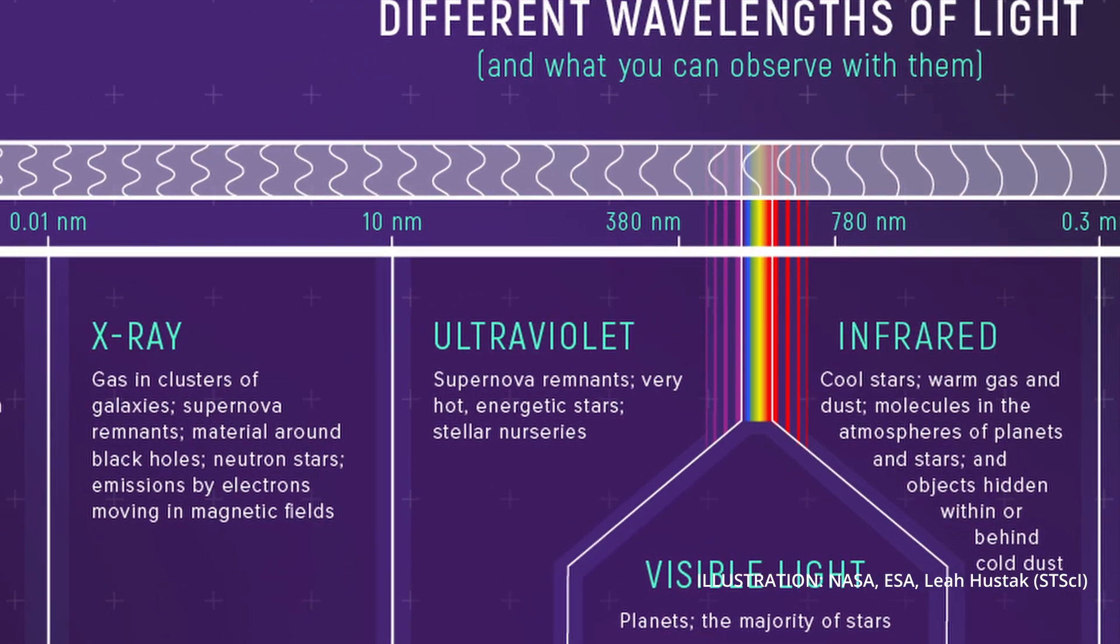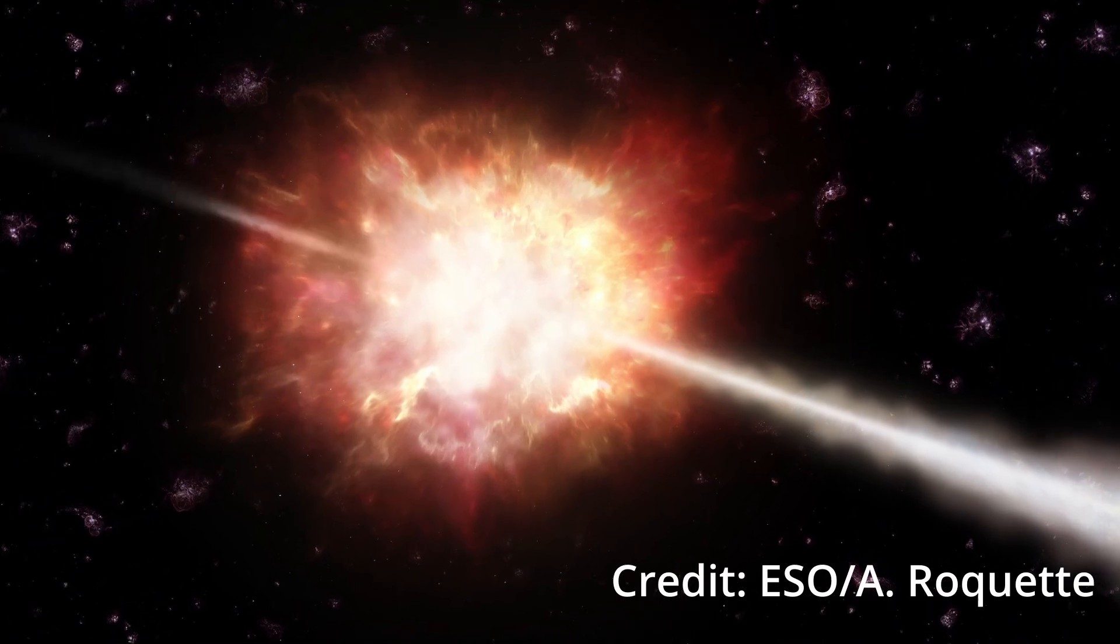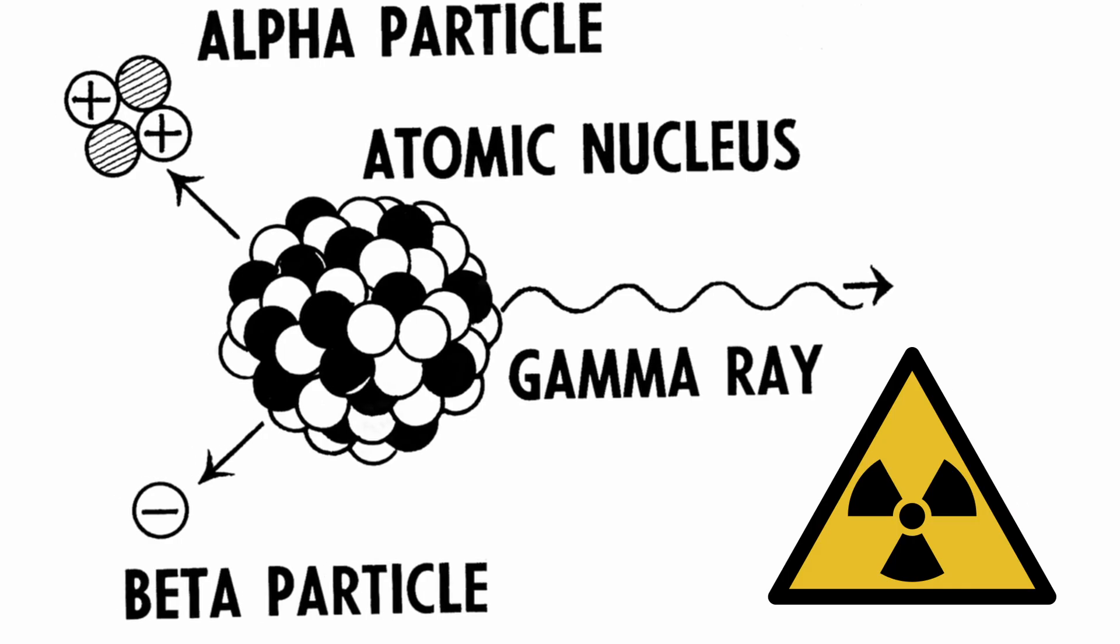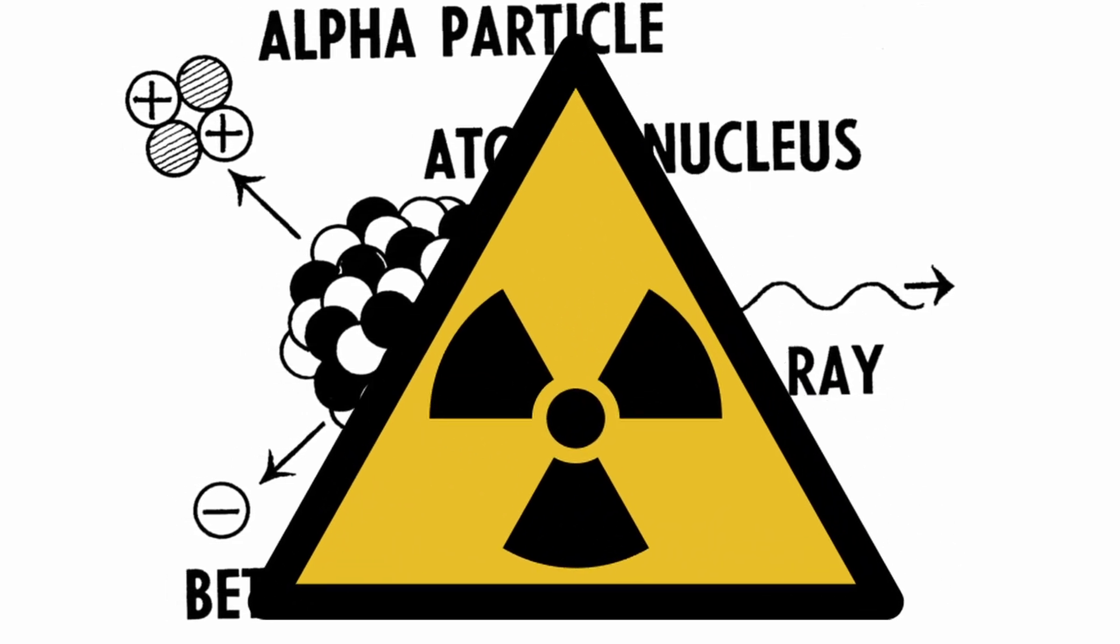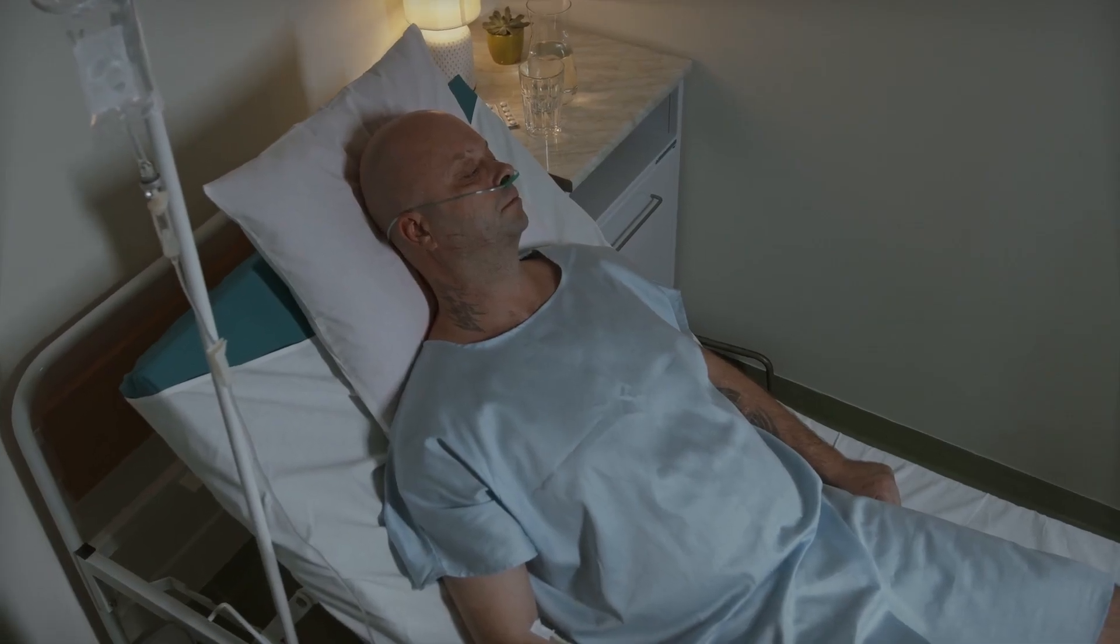Once we get shorter again, we get to gamma rays. These are some of the most energetic and dangerous photons out there. They come from things like black holes, cosmic rays, and radioactive decay. While dangerous, gamma rays are still useful in medicine for things such as radiation cancer therapy.